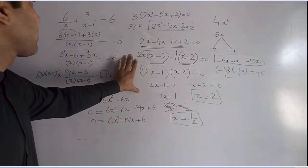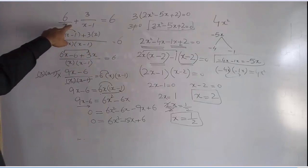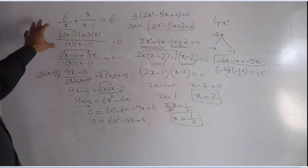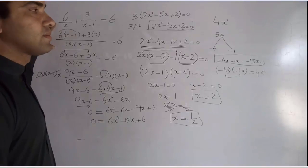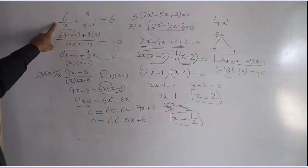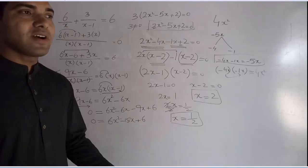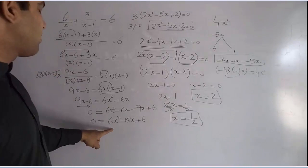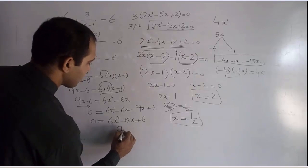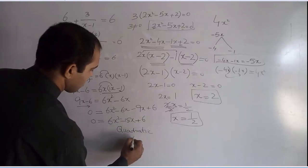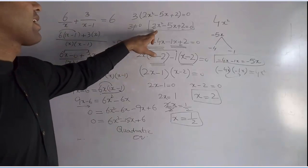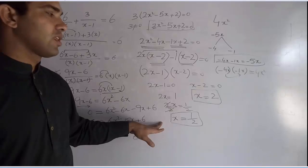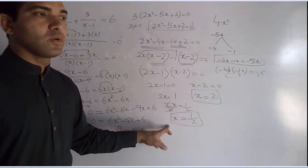To repeat: the original equation was 6 over x plus 3 over x minus 1 is equal to 6. We were given the task to solve this equation by factorization. We converted the equation into quadratic form by removing fractions using LCM, then factorized the resulting quadratic equation. After solving, we found x equals 2 and x equals 1 over 2.